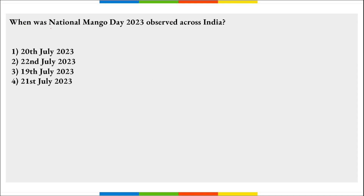National Mango Day was celebrated on 22nd of July, dedicated to the nutritious tropical fruit — mango. It was started by the National Horticulture Board of India in 1987 as the International Mango Festival to pay tribute to the mango.